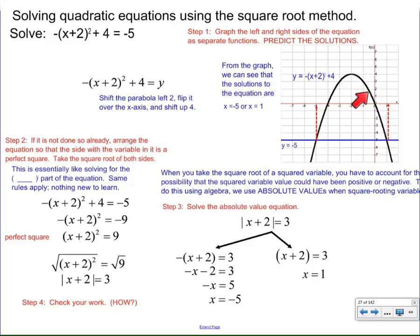So we go left 2, up 4, and then we go over 1, down 1, over 2, down 4. And we draw a parabola. We also draw a line at y equals negative 5, producing this line you see here. And we can predict the solution is going to be x equals negative 5 or 1.